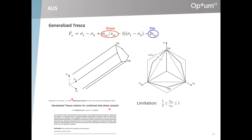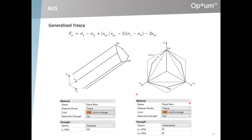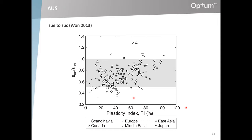The equation for the failure surface involves all three principal stresses. You can think of it as involving the strength ratio, which gives the shape of the surface in the deviatoric plane, and the compressive strength, which dictates the size. It's a pressure-insensitive prism with a cross section that depends on the extension-to-compression ratio. If the ratio is one, we have standard TRESCA; if it becomes one-half, we have a Rankine triangle. There is a limitation: the extension-to-compression ratio must be between one-half and one, otherwise the yield surface becomes non-convex. This model is available in both G2 and G3, called the TRESCA model with an option for generalized behavior.